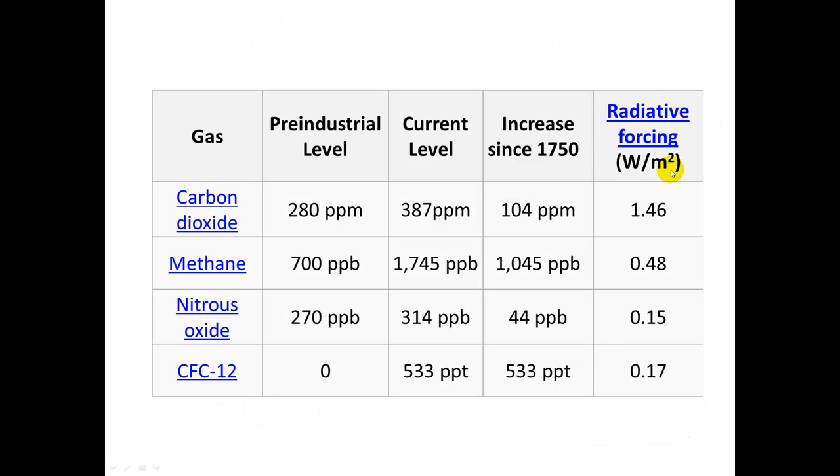I want to talk about radiative forcing, watts per meter square. This is how many watts, how many joules per second of heating is occurring for every square meter of the atmosphere. And we can see carbon dioxide has the biggest effect. Not because it's the strongest greenhouse gas per molecule, but because there are many more molecules of them. And methane, nitrous oxide, and CFC.